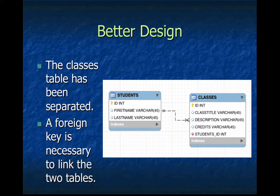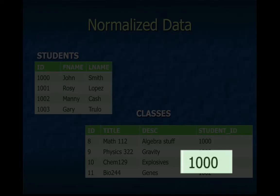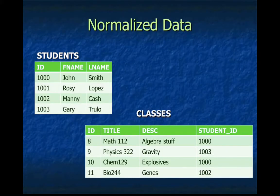The class table has been separated from the students table, and then we use a foreign key to tell one table where to find the student ID. You'll get data that looks more like this, where classes are assigned for different students. Student 1000 is John Smith, and you can see from the classes table that he is assigned to course number 8 and course number 10 — so math and chemistry. That's a better way to design without duplicating data.